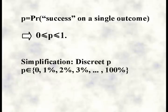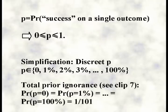I'm going to look at only 101 different possibilities for the value of p, namely 0, 1%, 2%, 3%, and so forth up to 100%. In order to see the effect of the data optimally, I'll use an ignorance prior on p. Each of the 101 possible values of p is assigned the probability 1 divided by 101, see clip 7.